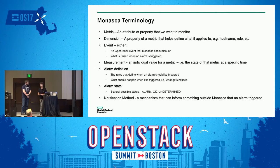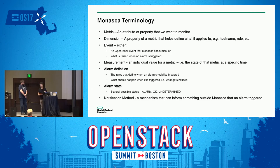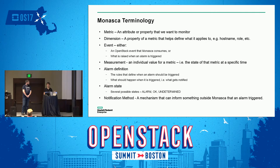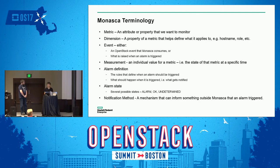Alarm definitions are not alarms themselves; they are the rules that determine if something that happened on the system is an alarm. An alarm can have three states: alarm, okay, or undetermined. Undetermined may seem strange, but if a VM monitored by Monasca is down because it's turned off, that is not an error and the alarm goes undetermined. But if the VM needs to be in a running state and it is down, that is an error.